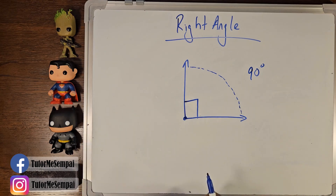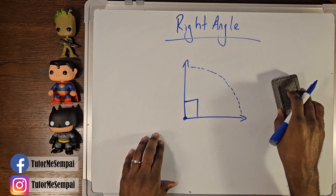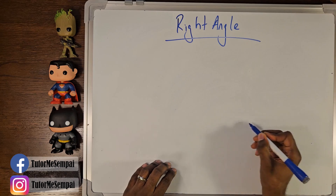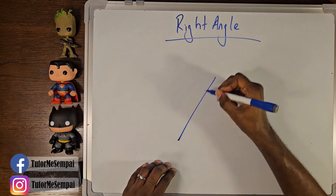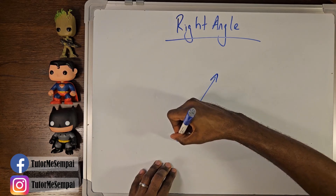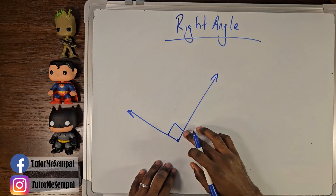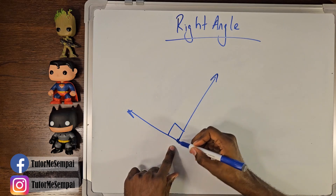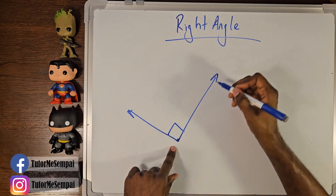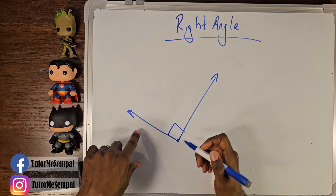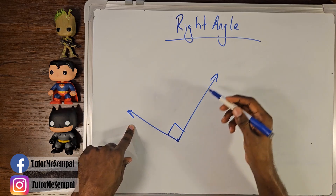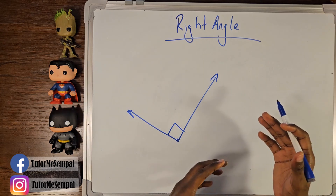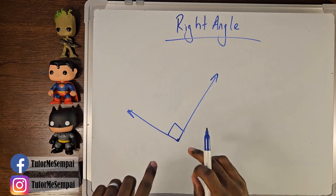Your acute angle is going to be everything less than 90 degrees, but the moment you are exactly 90 degrees, you have gone from an acute angle to a right angle. You can also have your angle written in different orientations — not just straight across. If you were to rotate it, it would be straight up and down. It goes perpendicular to your ray. Your right angle is going to be formed when you have two perpendicular rays. So acute is everything less than 90, and right angle is exactly 90.